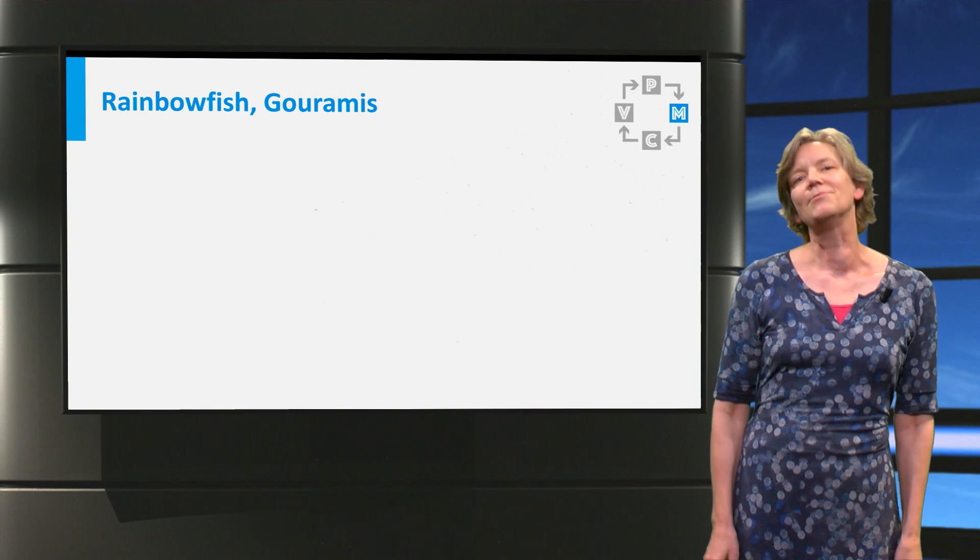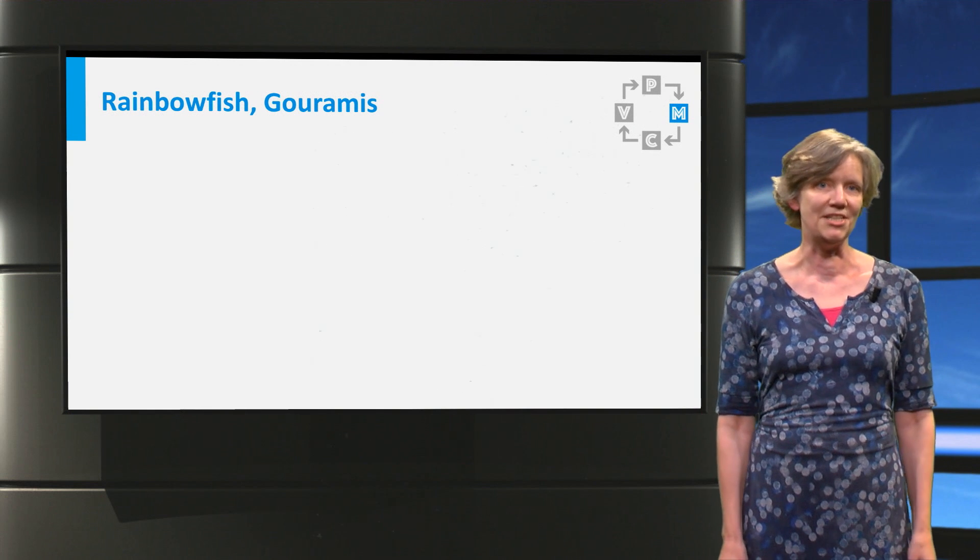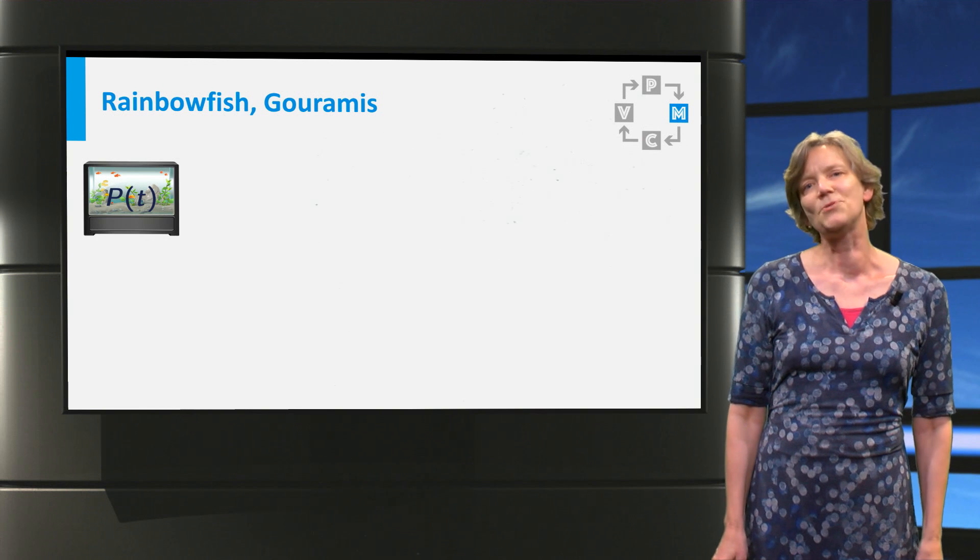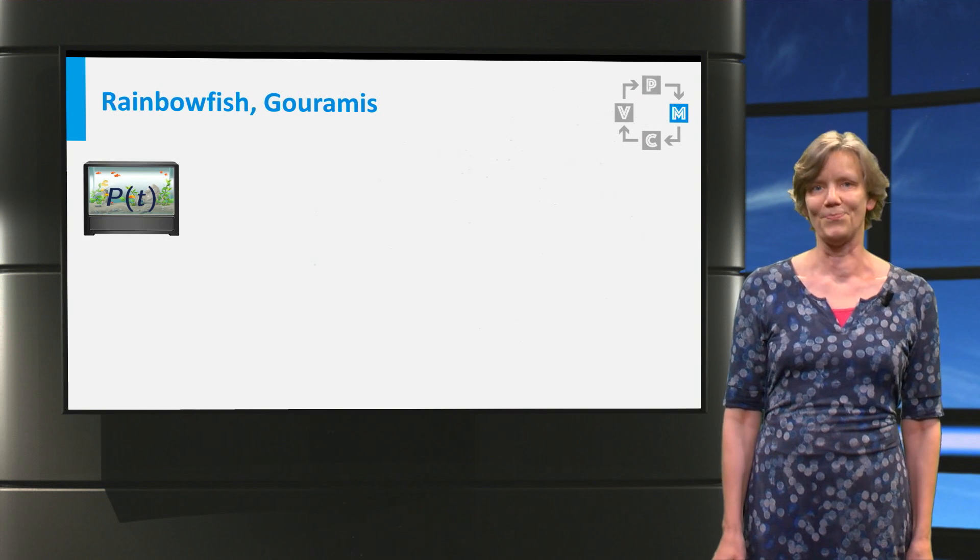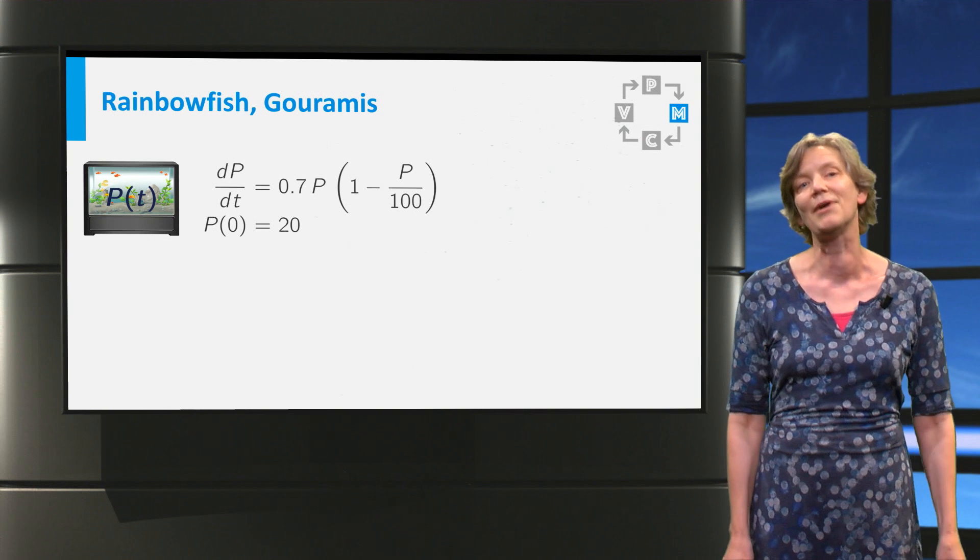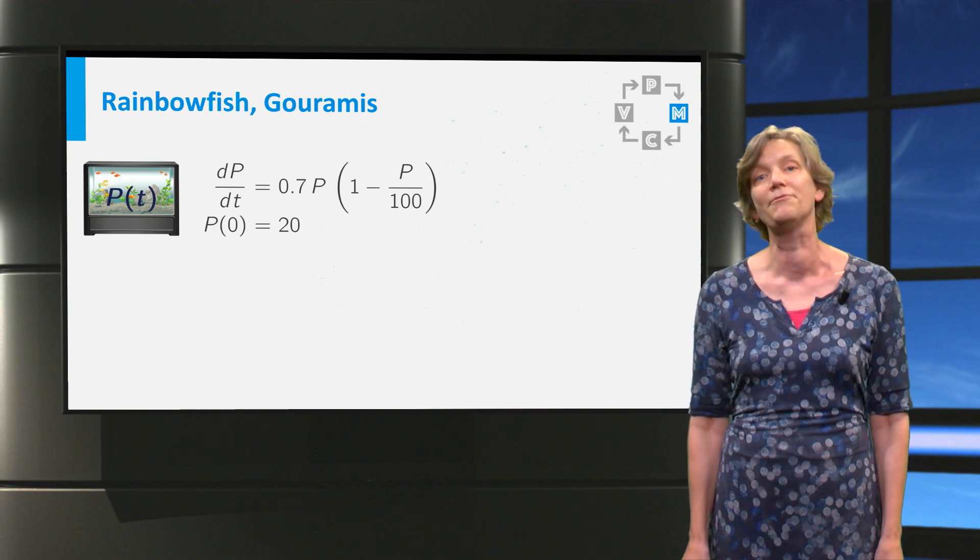First we will consider what happens with the separate species. Let's put the rainbow fish in this virtual aquarium. The model for the population by itself is this differential equation.